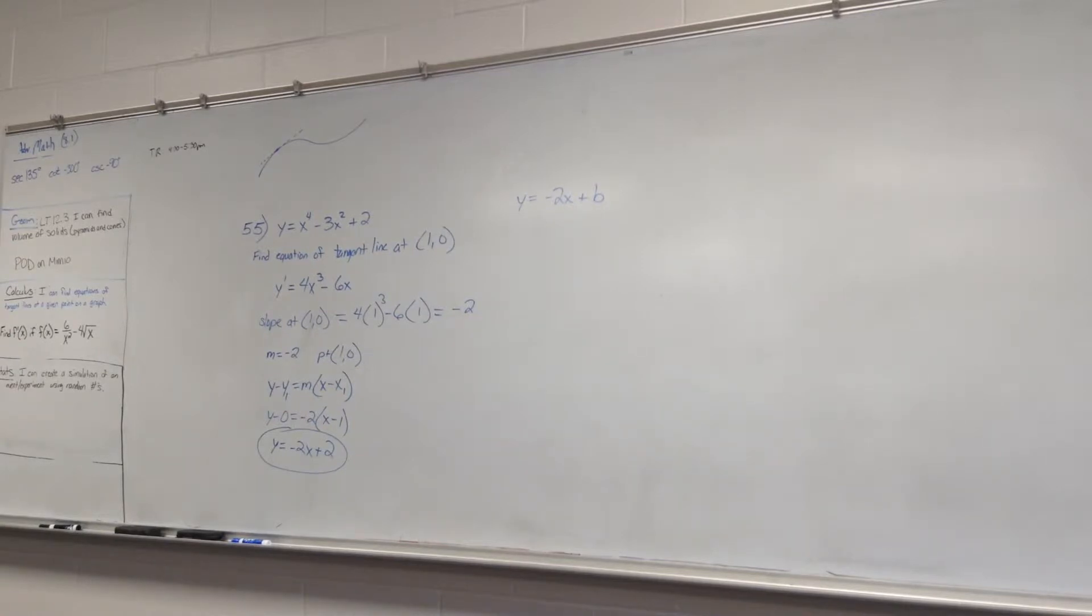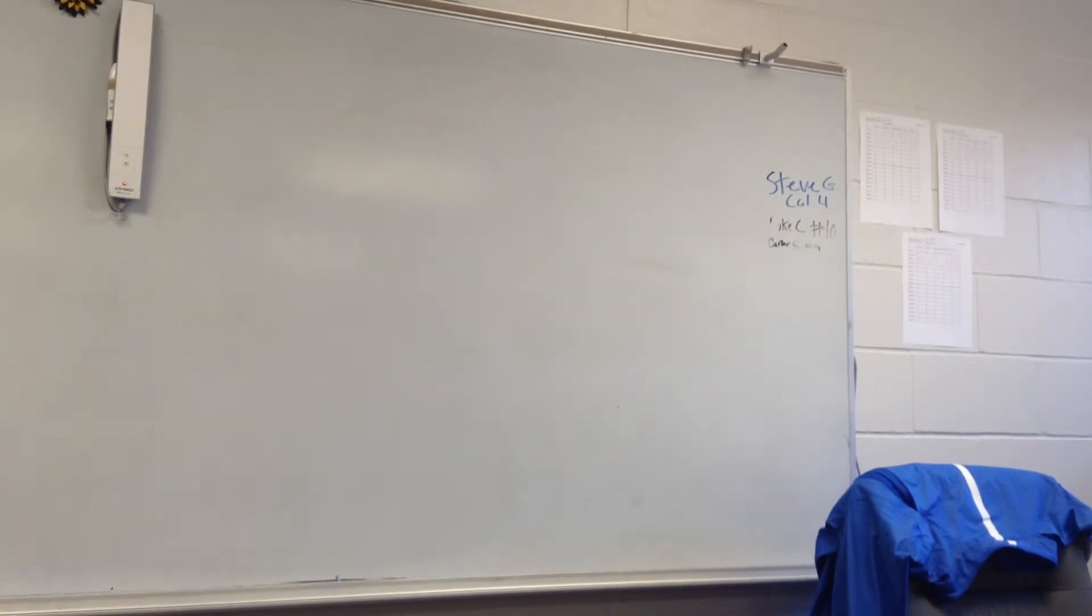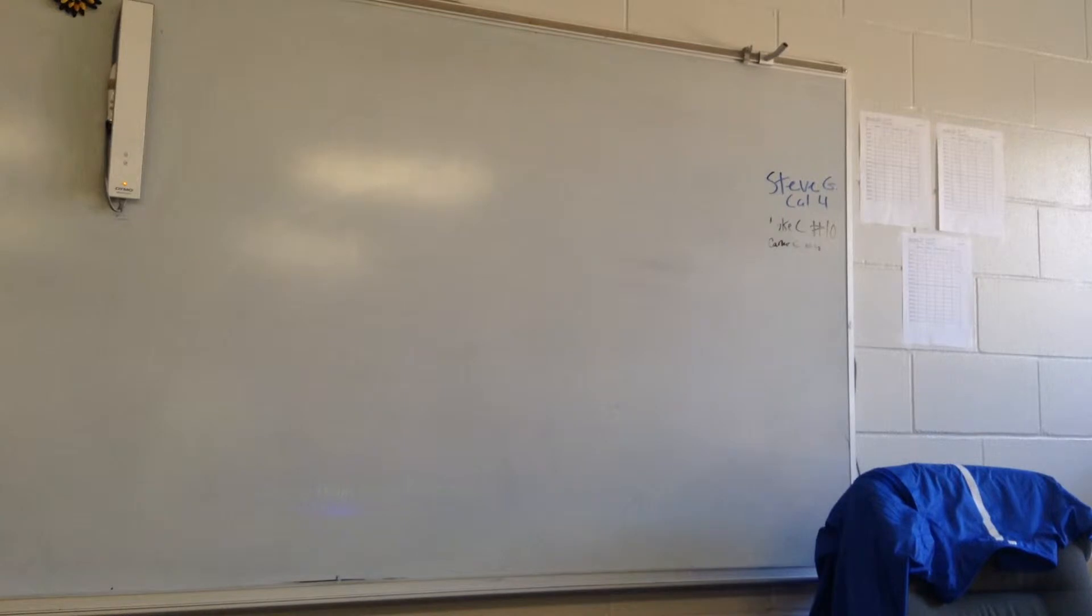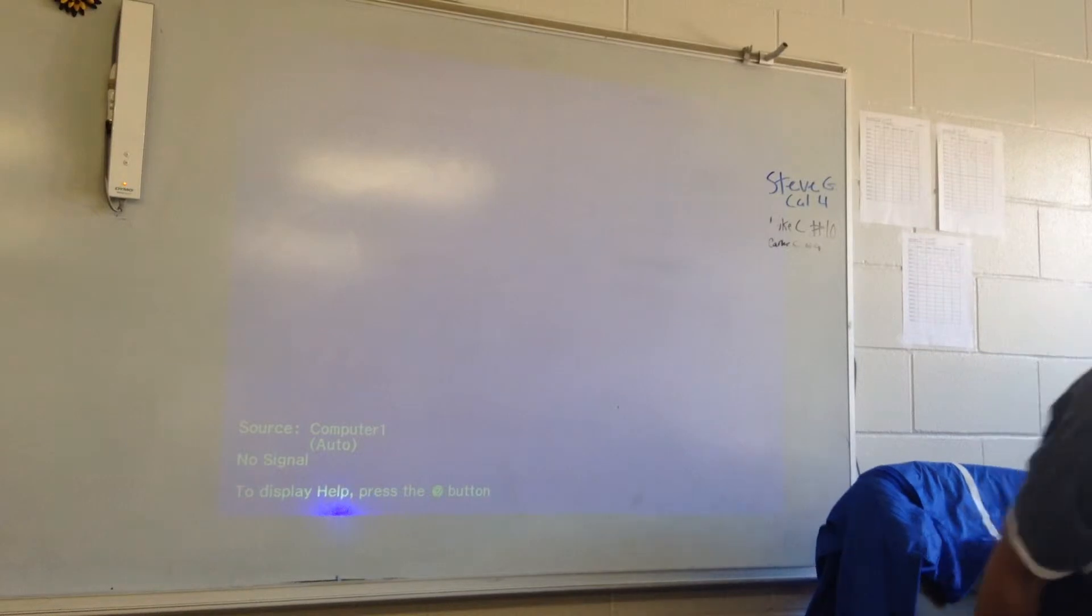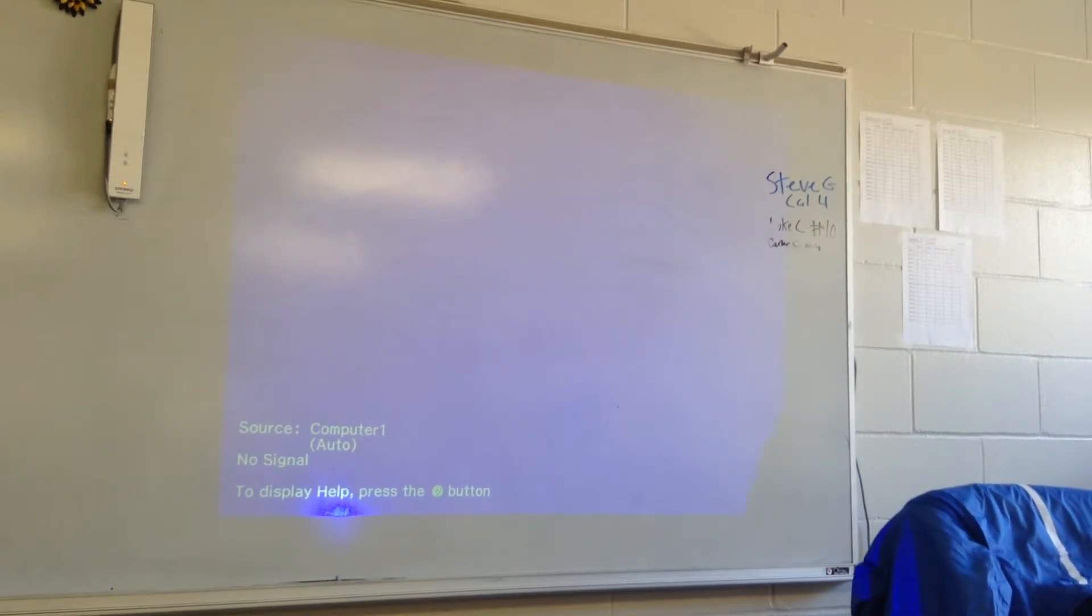Part B and C are on the calculator. So if you would please on your graphing calculator, enter the original equation, y equals x to the 4th minus 3x squared plus 2. And also enter the equation of the tangent line and get rid of all other equations.